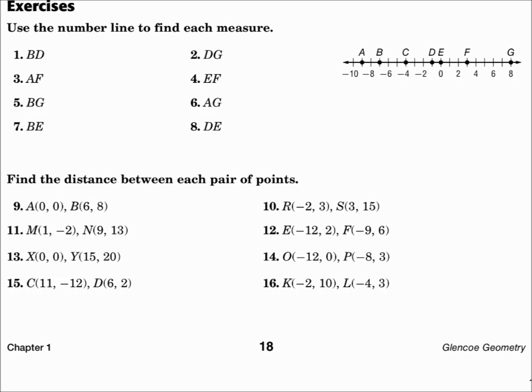Number 3, the measure of segment AF. A is at negative 9. F is at 3. Do the absolute value. 3 minus negative 9. That's the absolute value of 12, which is 12.